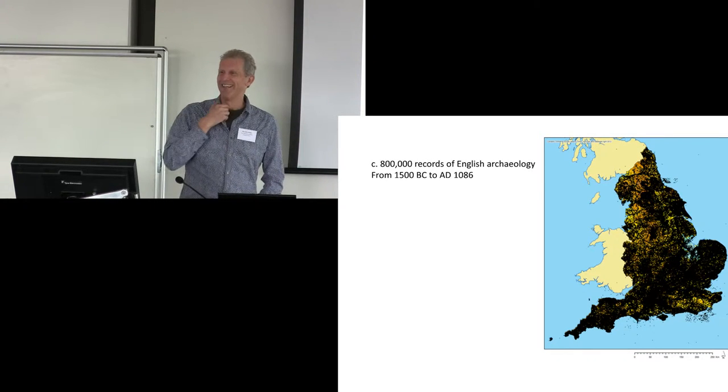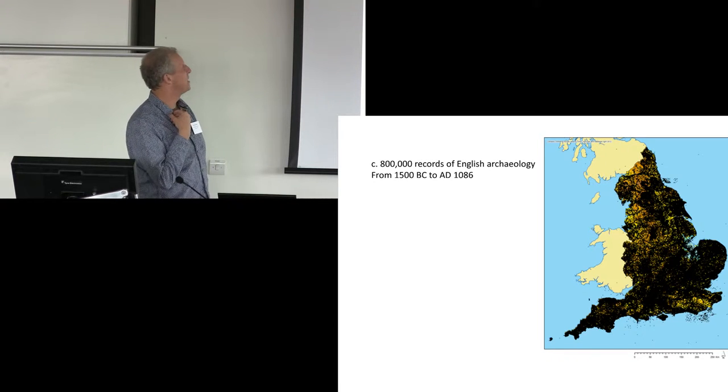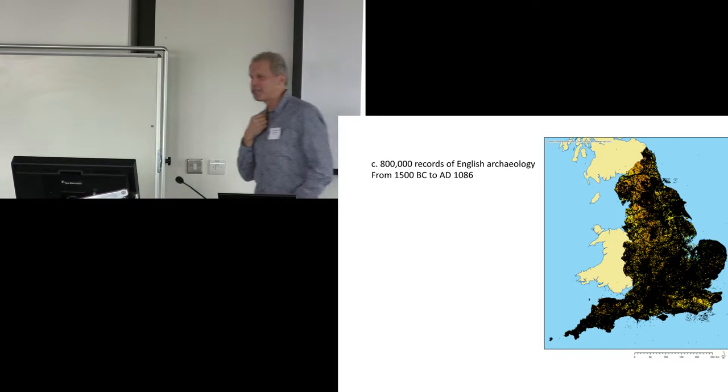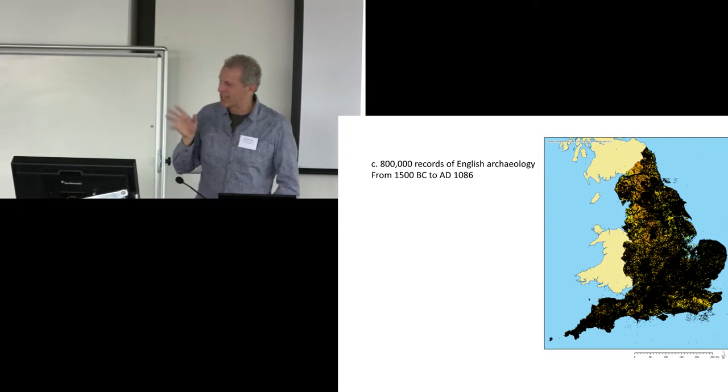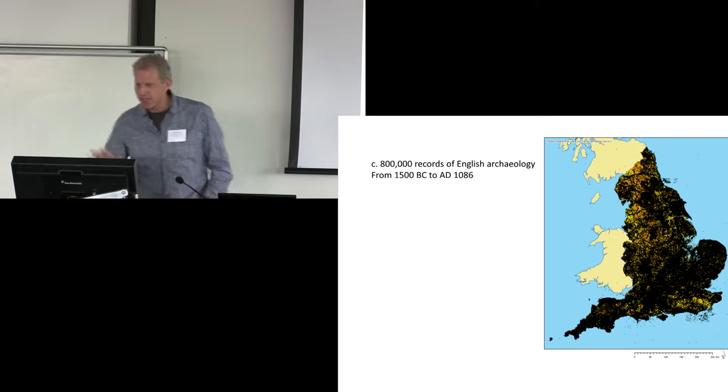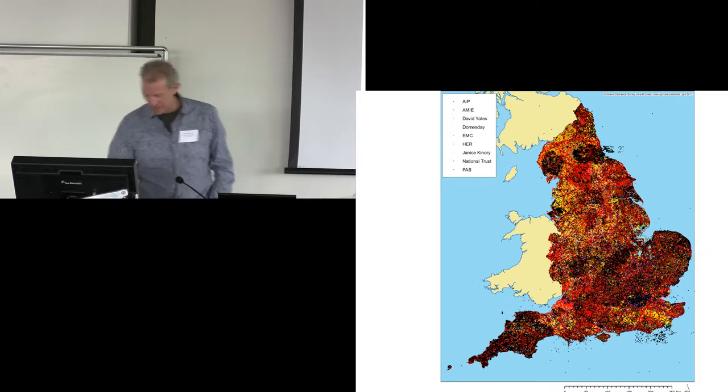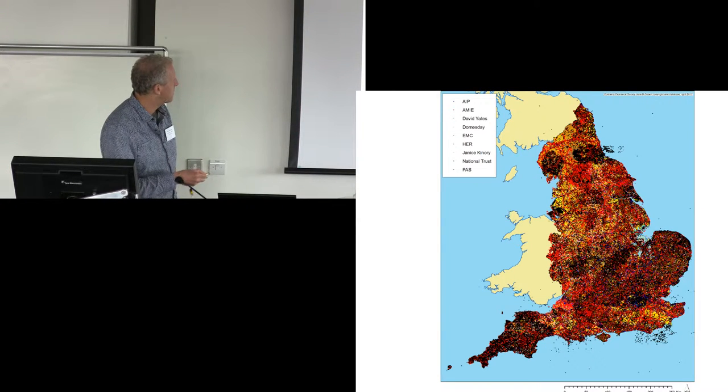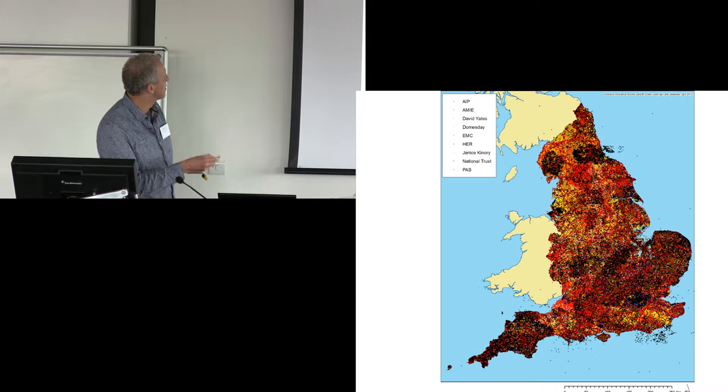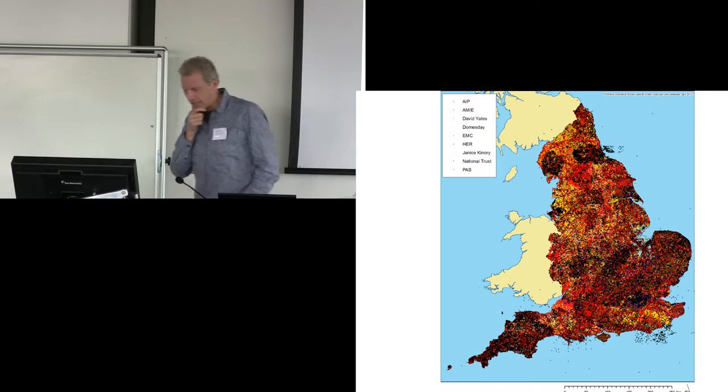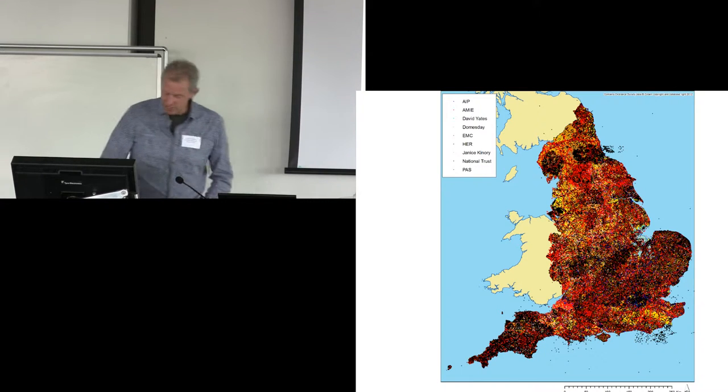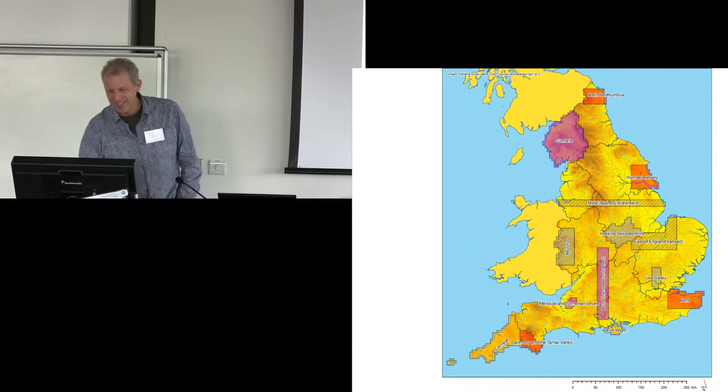So these are our 800,000 items. As you can see, there are some spatial issues with some of them, because some of them clearly aren't where they should be, being in the sea rather than on the land. Some things should be in the sea because they are recorded as things in the sea, but there are various different spatial aspects. So these are 800,000 records of English archaeology, 1500 BC to 1086 AD. These are all maps produced by Chris Green, and he's colored them up in terms of the various different sources that they have. And many of these maps, I think it's true to say, are on Chris's blog. I'll give you the address of the blog later on.